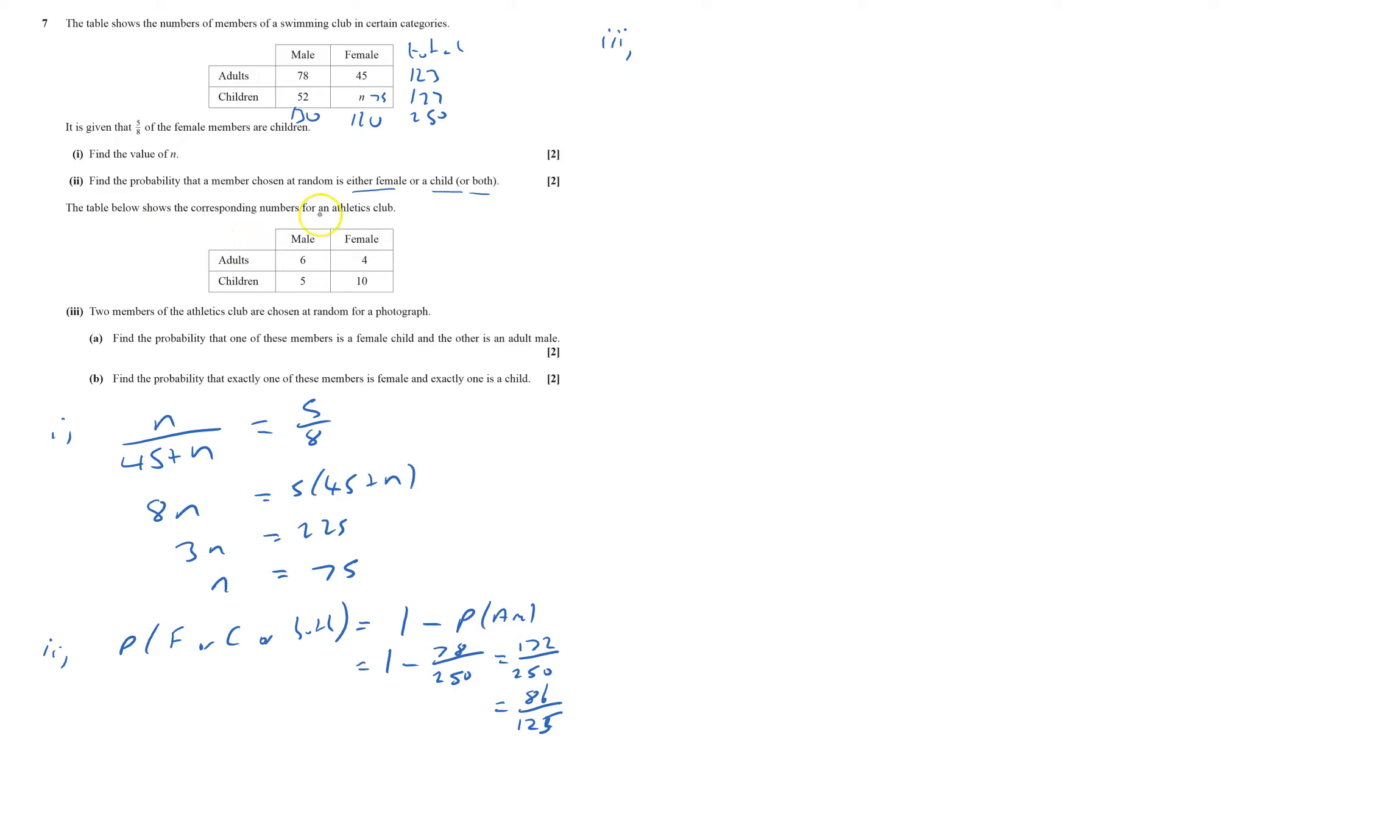Okay, we've got a different thing. This is an Athletics Club, that was swimming at the top, it's Athletics here. I'm still going to put down my totals. That's 10, that's 15, 25. I see 11, 14, 25, good.